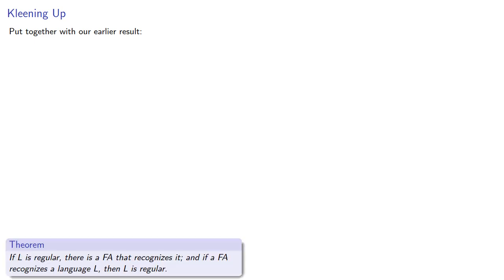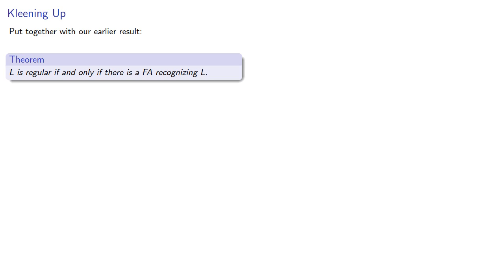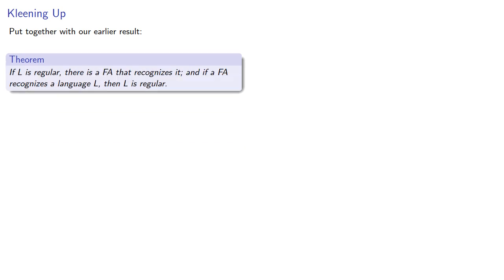Put together with our earlier result, we have Kleene's theorem. If L is regular, there is a finite automaton that recognizes it, and if a finite automaton recognizes the language L, then L is regular. It's traditional to state these related if-then statements as a single if-and-only-if statement, a biconditional. In other words, L is regular if and only if there is a finite automaton recognizing L. But again, any time you run into an if-and-only-if statement, remember it actually conceals two linked conditionals. So it's better to think about this as the pair of conditionals.